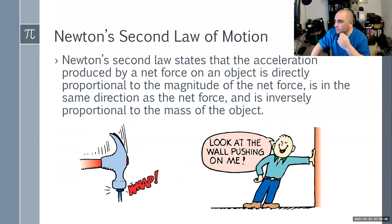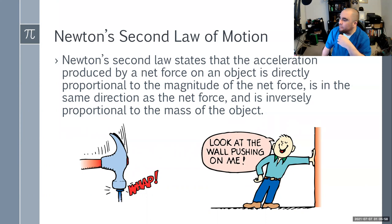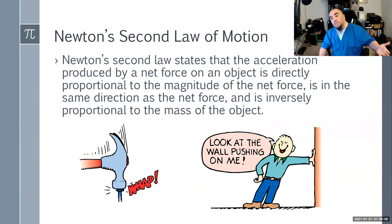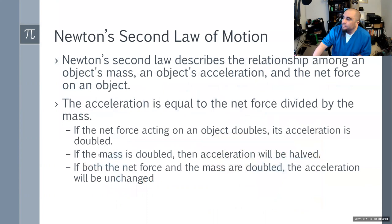Newton's second law states the acceleration produced by a net force on an object is directly proportional to the magnitude of the net force, is in the same direction as the net force, and is inversely proportional to the mass of the object. When a hammer strikes down on a nail, the nail strikes back on the hammer with an equal amount of force. When you push against the wall, the wall pushes back with an equal force so that your net force equals zero.